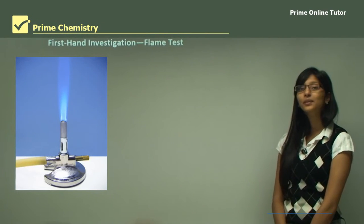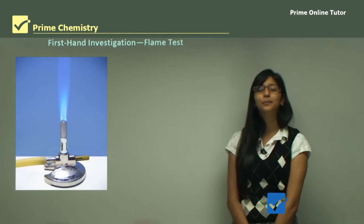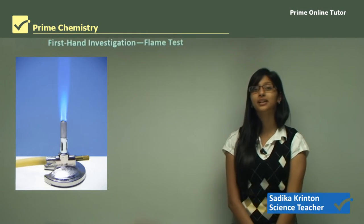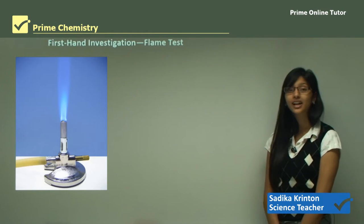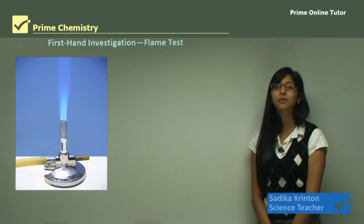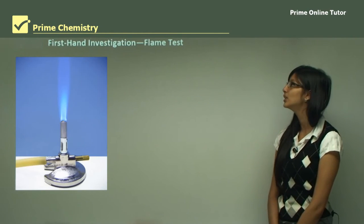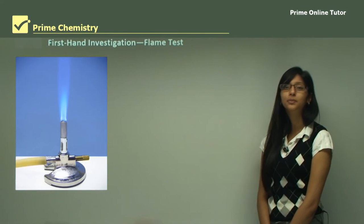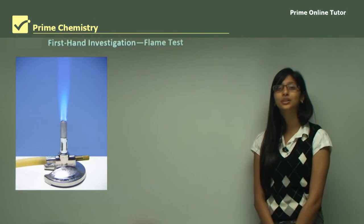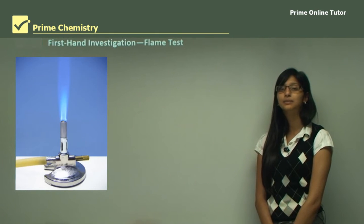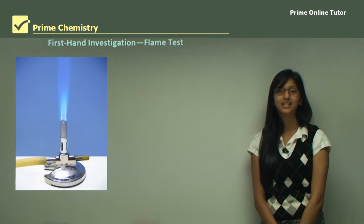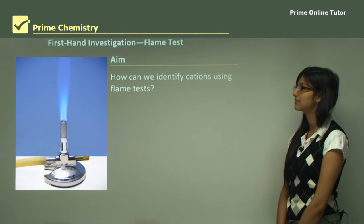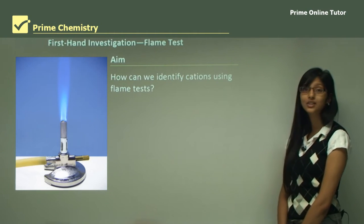Hi everyone. Today we are looking at the topic chemical monitoring and management, and today we will look at the first-hand investigation: flame test. You should perform this investigation in your school. So let's look at what methods we can use to perform the flame test and what results we expect. The aim of this experiment is to identify cations using flame tests.